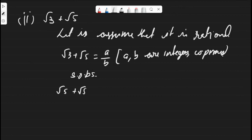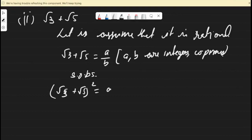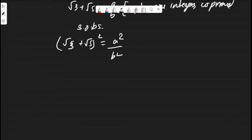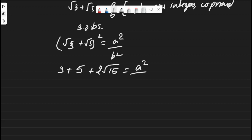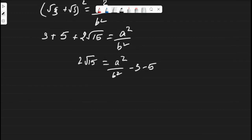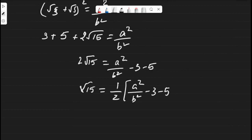Let's square both sides: root 3 plus root 5 whole square equals a squared by b squared. Applying the (a + b)² formula, we get 3 + 2√15 + 5 equals a² by b². Rearranging, 2√15 equals a² by b² minus 3 minus 5, so root 15 equals 1 by 2 times (a² by b² minus 3 minus 5).